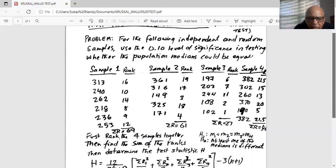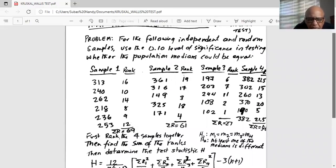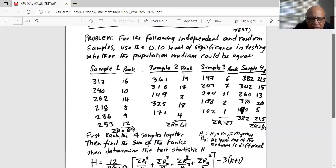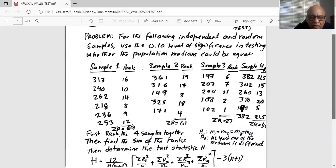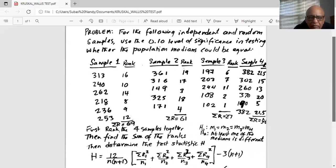Next, we are looking for the sample with rank four. And that is in sample two. Data point is 171, and its rank is four. And we continue in this way. The next one is in sample four. Data point is 190. Its rank is five. So we complete the ranking for all four samples taken together.